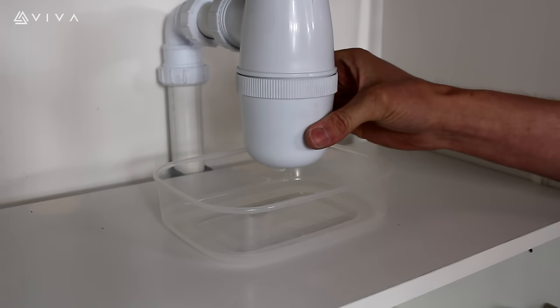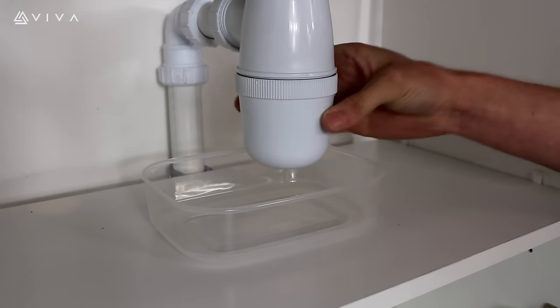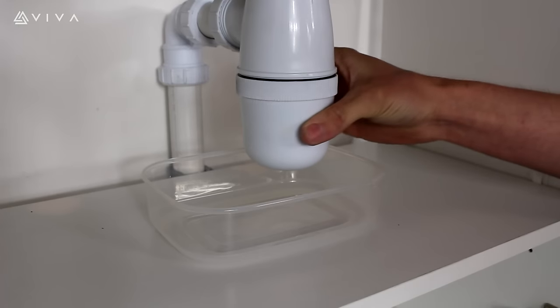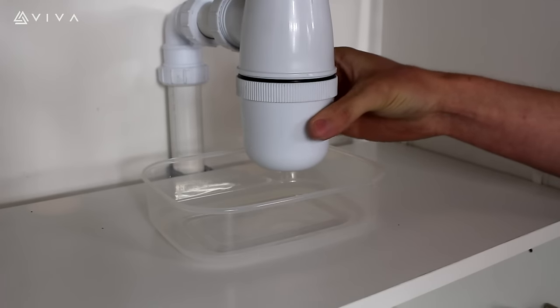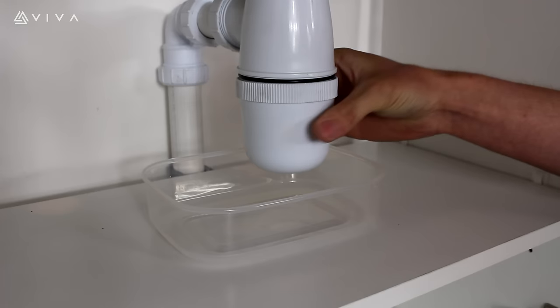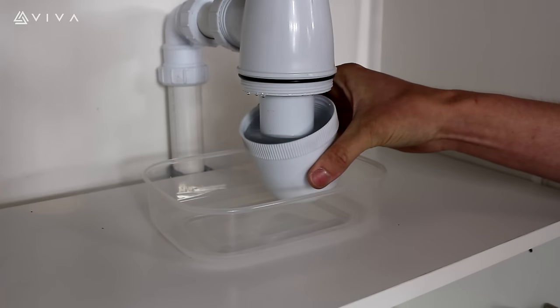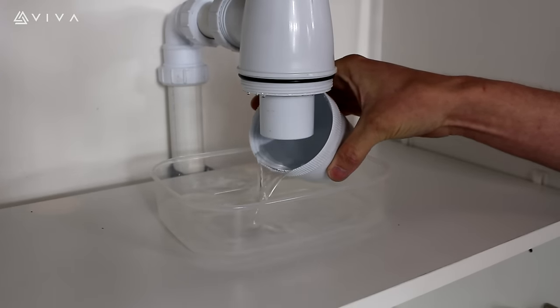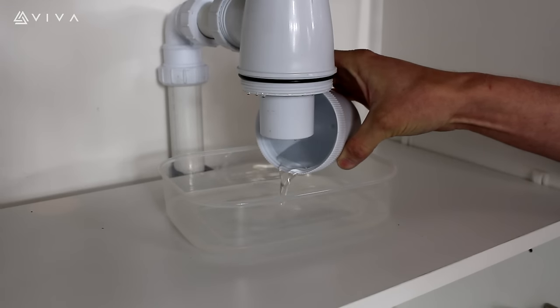To clean the trap, empty the sink and use a suitable container and place underneath. Turn the base of the trap clockwise until the bowl can be removed. Empty the water and clean the trap.